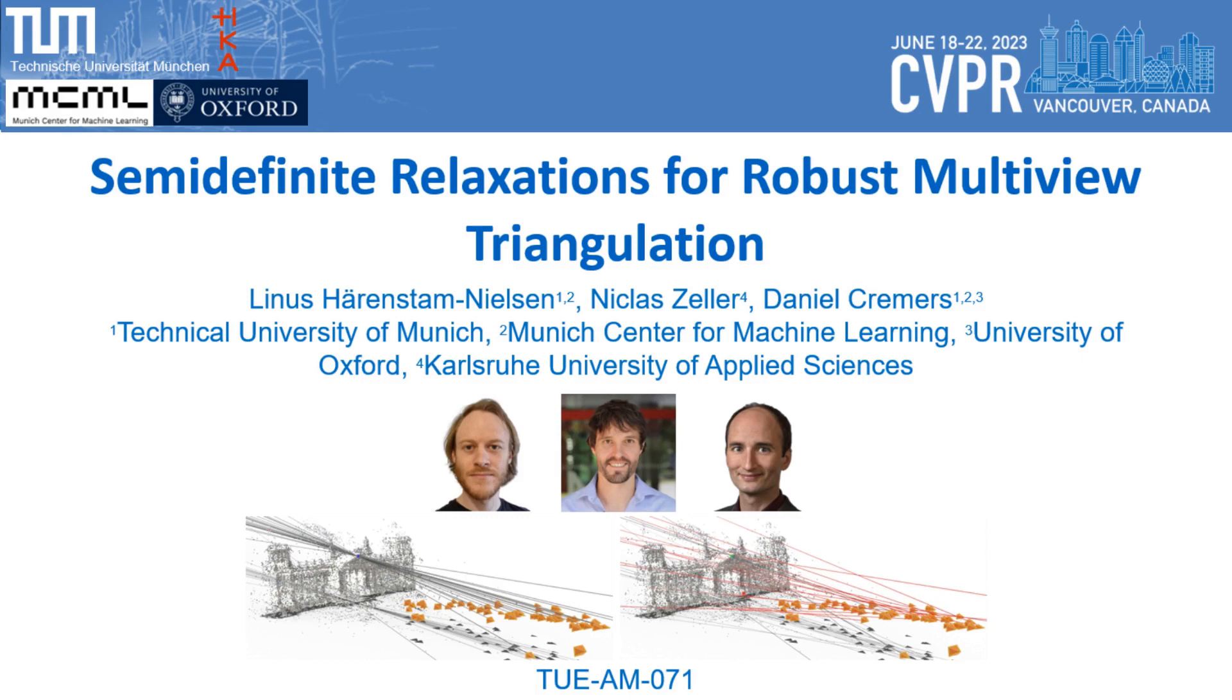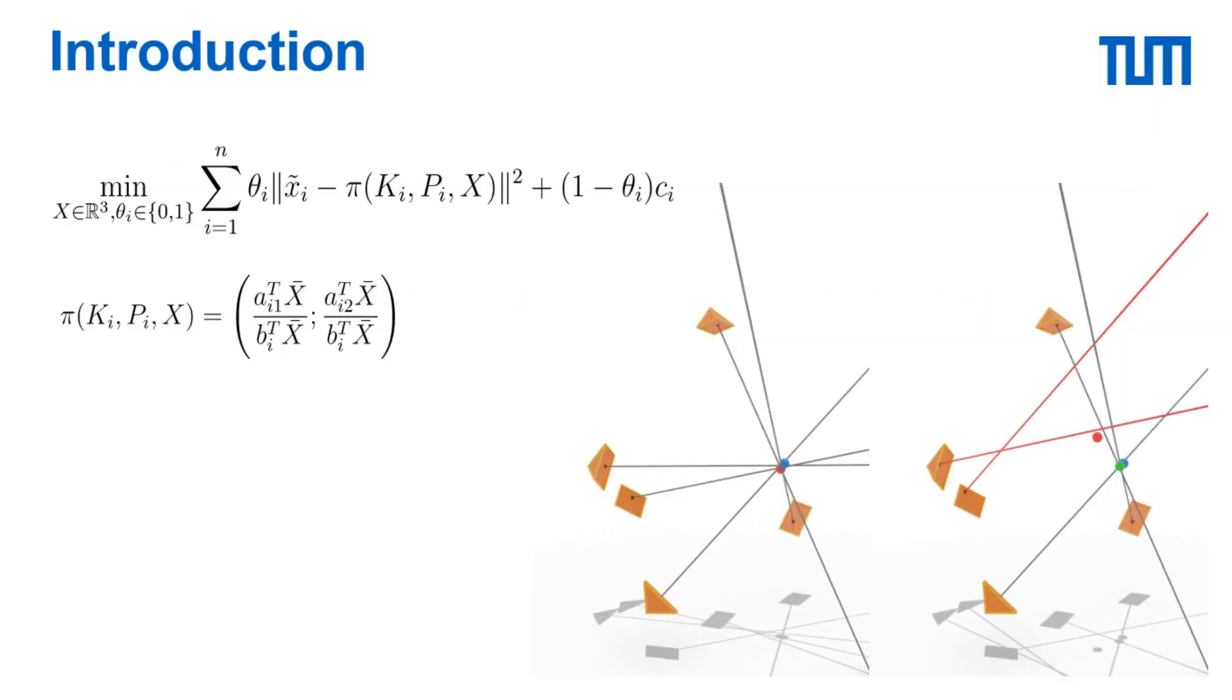Hello everyone, my name is Linus and I'm happy to present our work on semi-definite relaxations for robust multi-view triangulation. Robust multi-view triangulation is a classical problem in computer vision which appears at the core of many 3D reconstruction pipelines. The objective is to estimate the location of a 3D point given n observations from distinct camera views which are corrupted by both noise and outliers. As with most robust vision problems, it is intrinsically both non-convex and combinatorial in nature, but despite this we show that the globally optimal solution can be found in most cases using semi-definite relaxations.